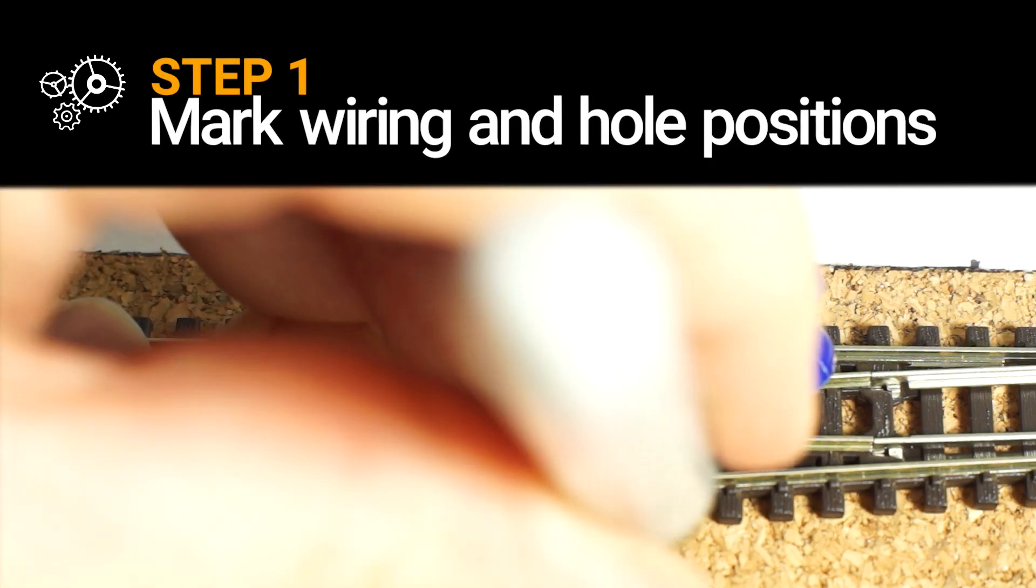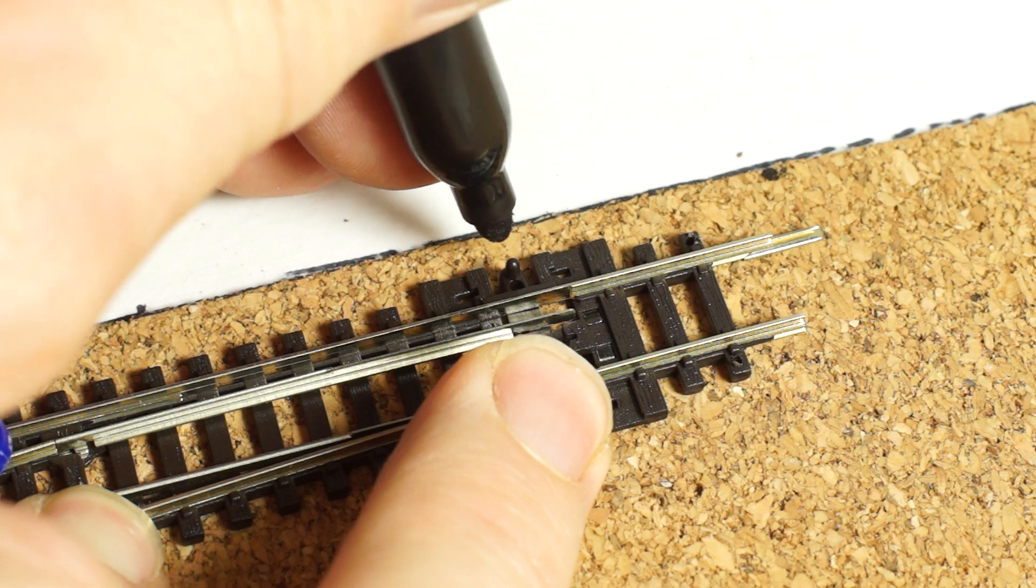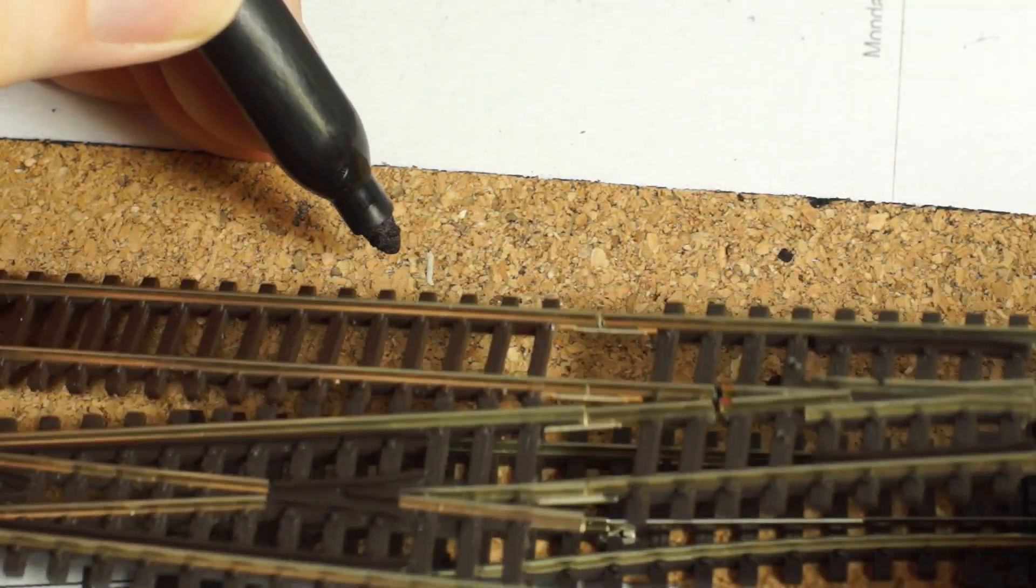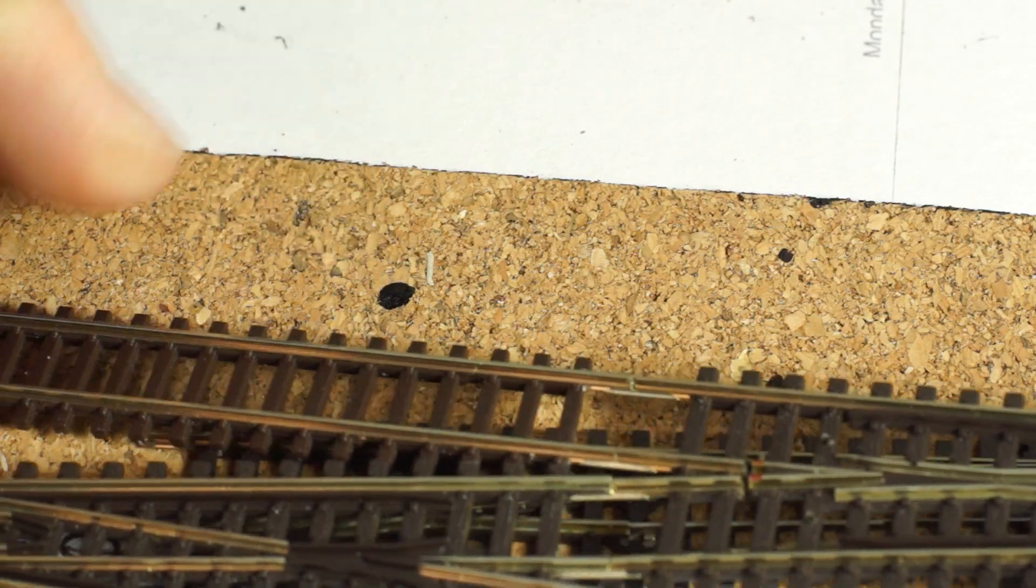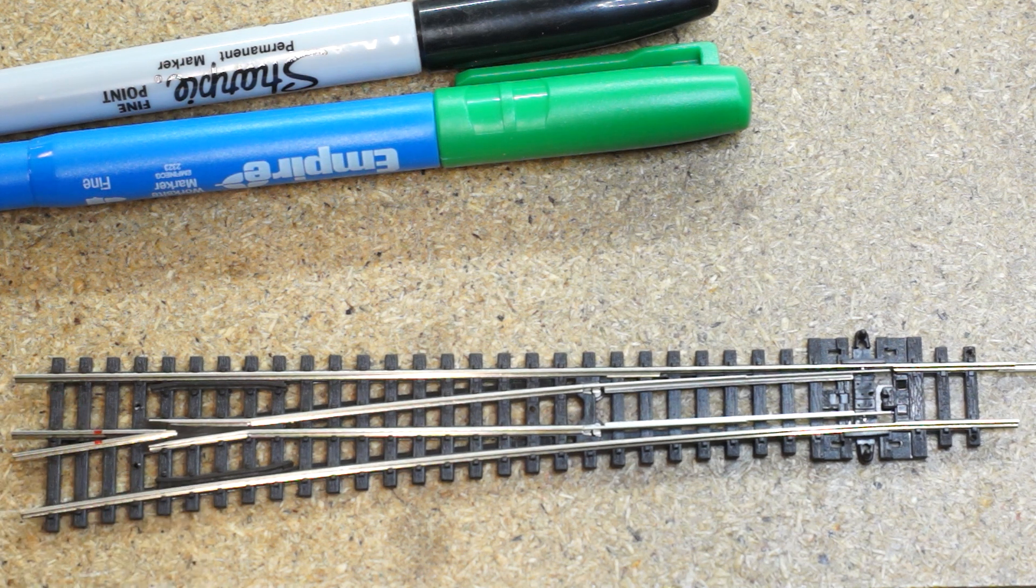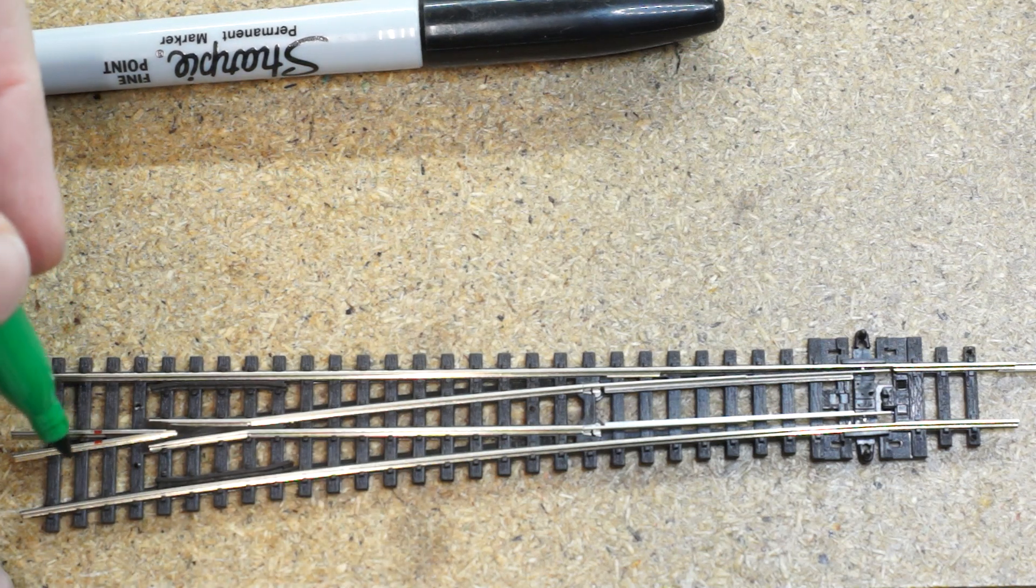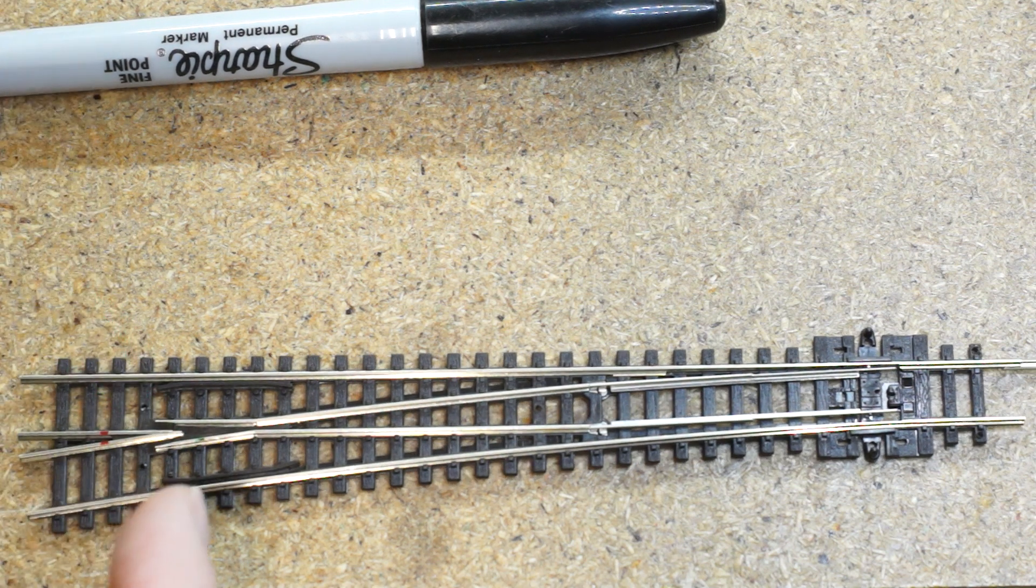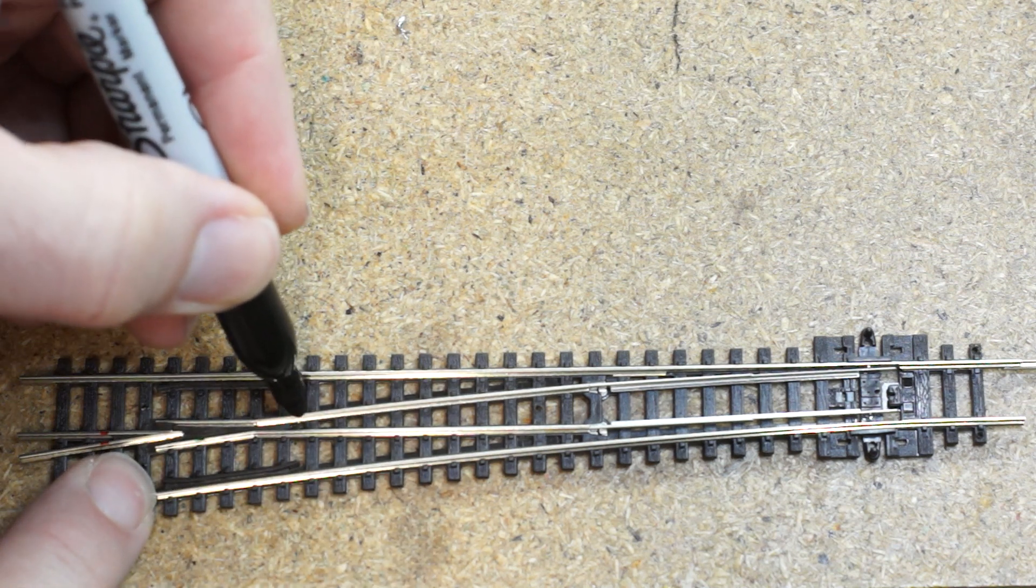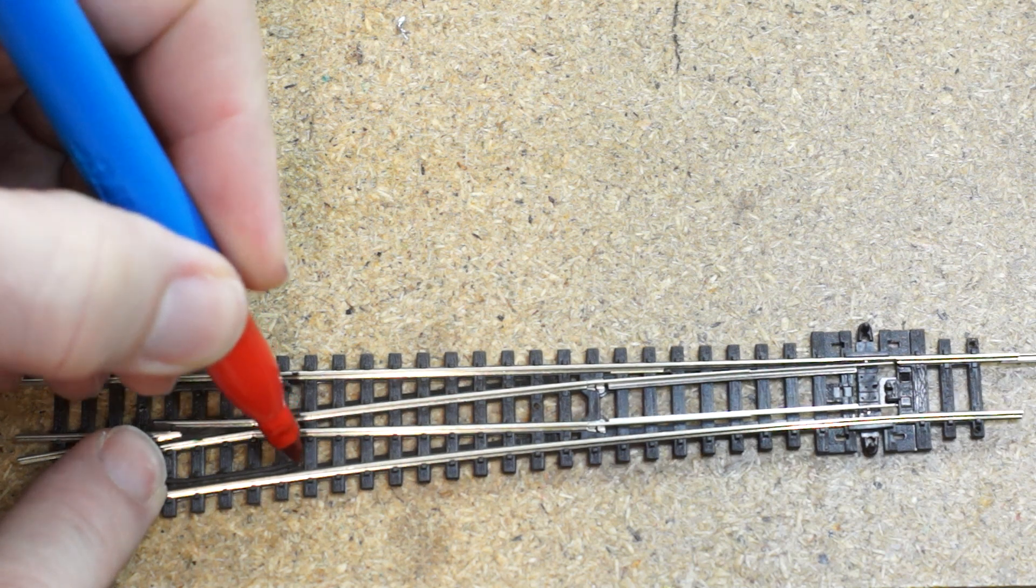Step one: mark wiring and hole positions. After gluing down your FOMO cork track bed, mark the precise location where you'll drill four holes through the bench work. There are two holes for feeders, one for the frog wire, and a bigger one for the turnout motor pin. Then mark on the turnout itself where you'll make the cuts and where the power feeders and frog wire will be soldered on. I use the black to the back principle, where my negative feed is closest to the wall. I use coloured markers so I don't get confused when soldering my black and red feeder wires later.